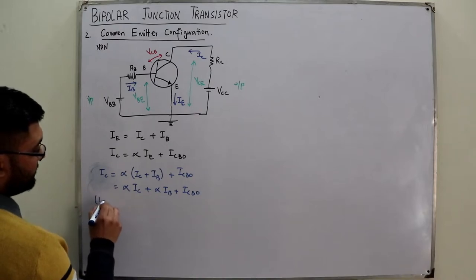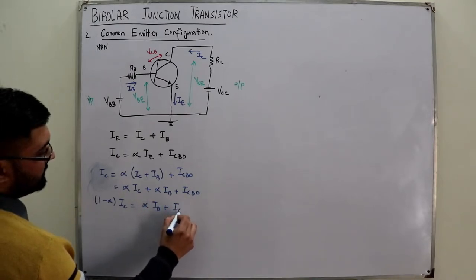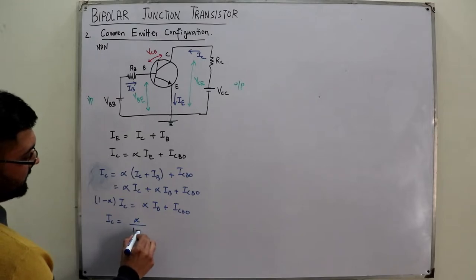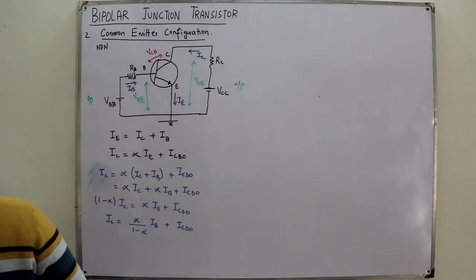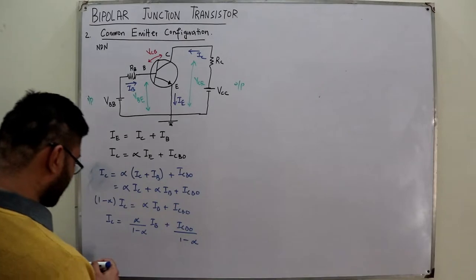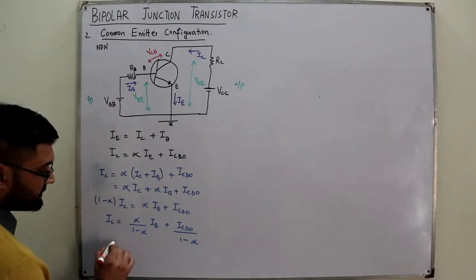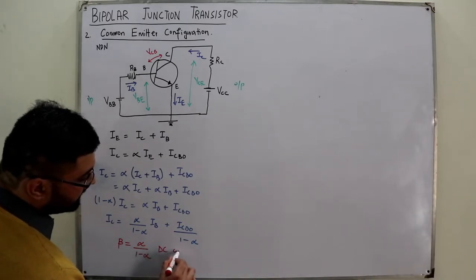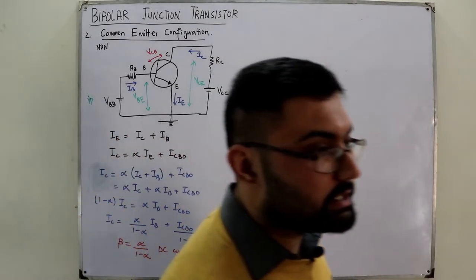Rearranging: (1 − α)·IC = α·IB + ICBO. Dividing through by (1 − α): IC = [α/(1−α)]·IB + ICBO/(1−α). The factor α/(1−α) is another DC current gain, represented by β. So β = α/(1−α), which is the DC current gain for the common emitter configuration.